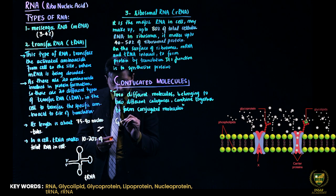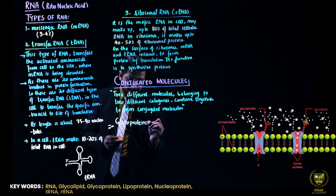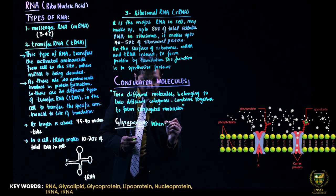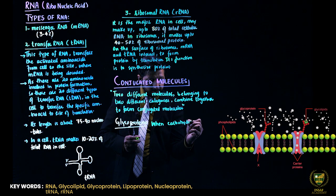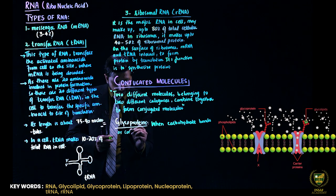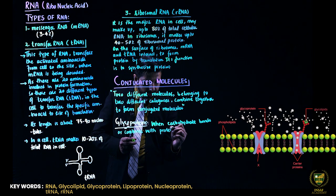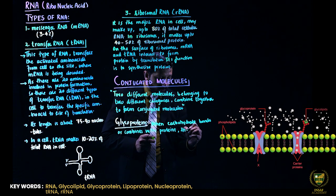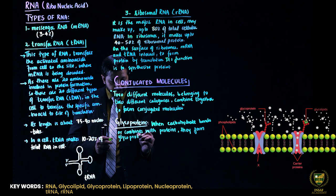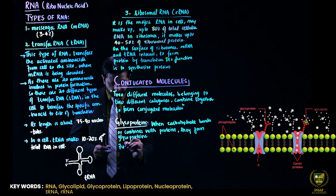First of all, glycoproteins. So this is a conjugated molecule. It is formed when the carbohydrate bonds or combines with protein molecules. They form glycoproteins. And what is its function?